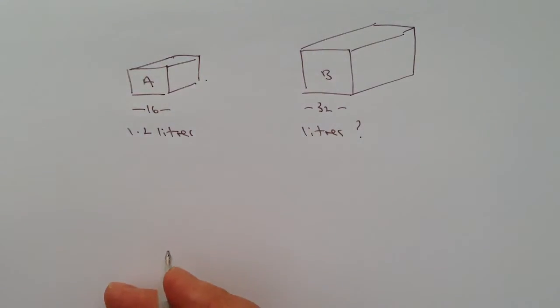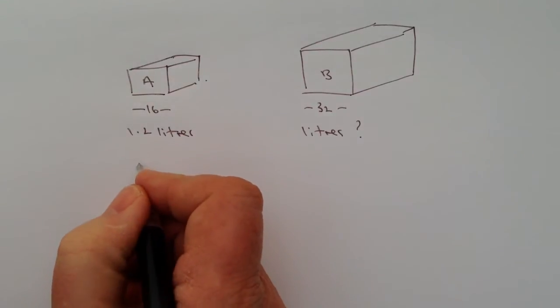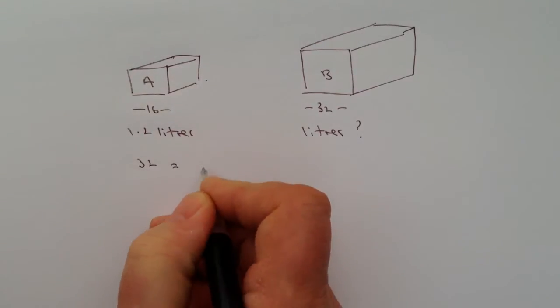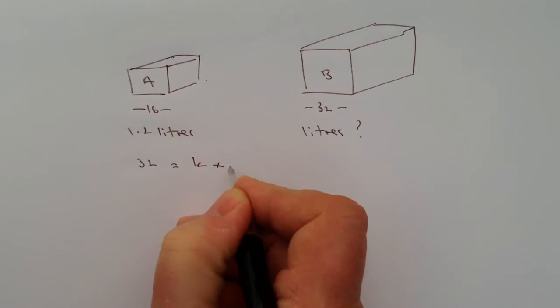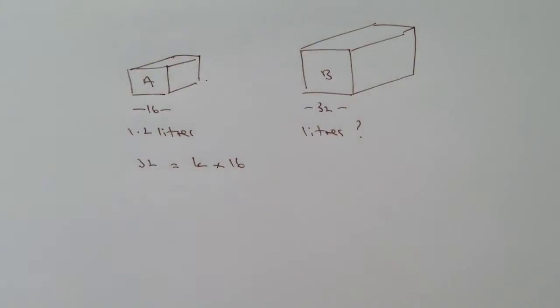So let's just have a look at this, what we're saying is that shape B which is 32 equals a constant times 16. And this constant you and I know is 2, it's twice the length.